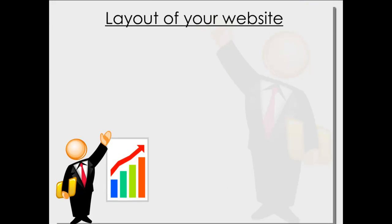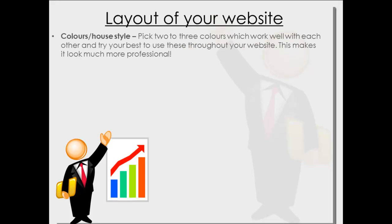The last topic here is the layout of your website — specifically the colours and house style. House style just means a consistent colour or consistent theme throughout your website. Pick two or three colours that work well together and use them throughout the website — even on images, try to make sure the images match those colours. This makes your site look much more professional. Try to pick two or three colours and use them consistently.